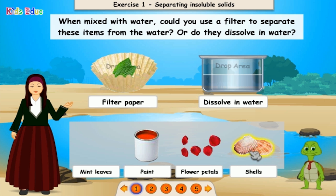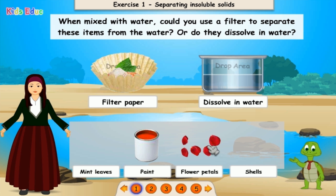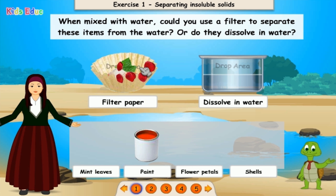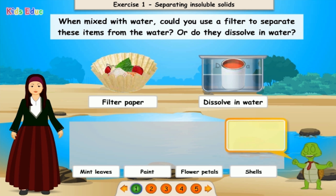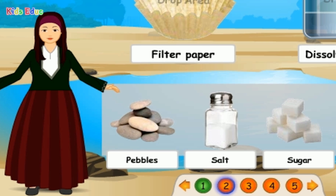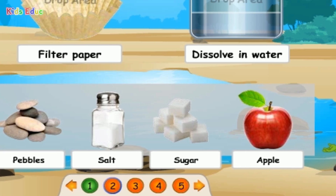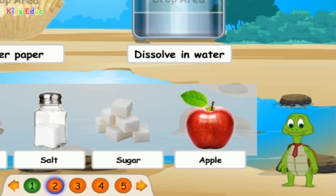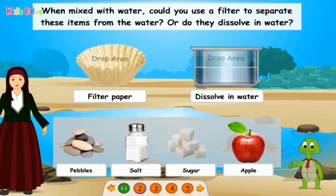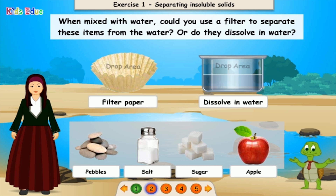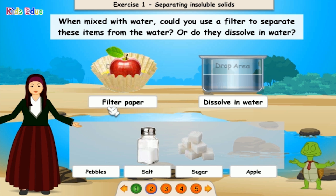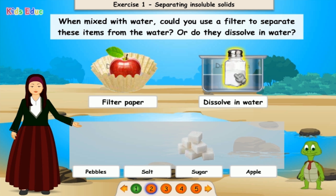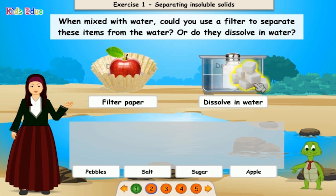Mint leaves: insoluble. Flower petals: insoluble. Paint: soluble. You're doing great! Pebbles. Salt. Sugar. Apple. Pebbles: insoluble. Salt: soluble. Sugar: soluble. That's perfect.